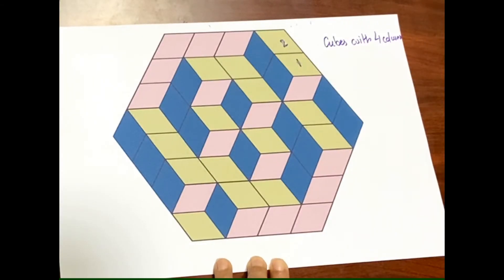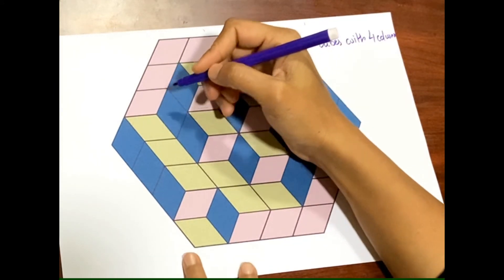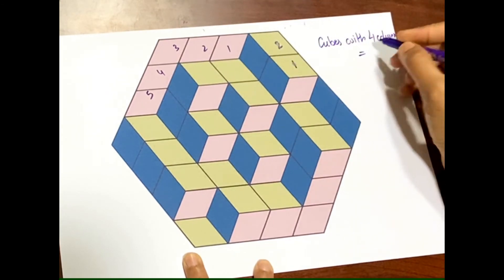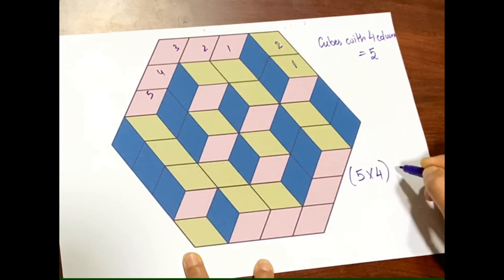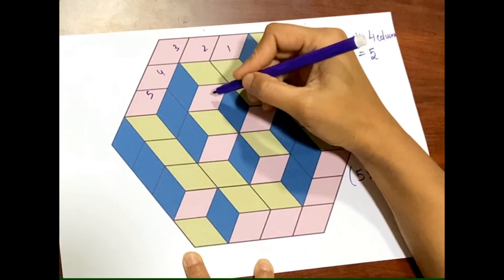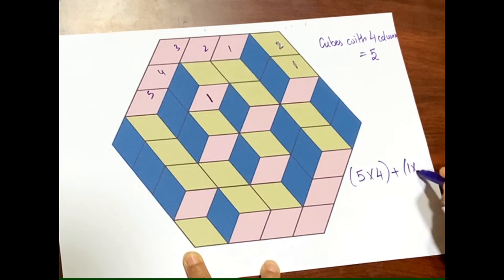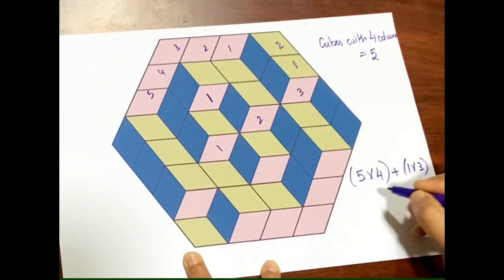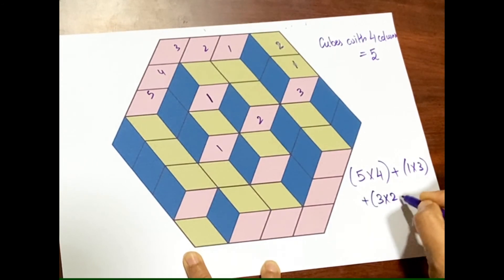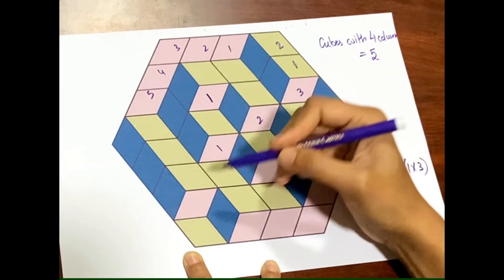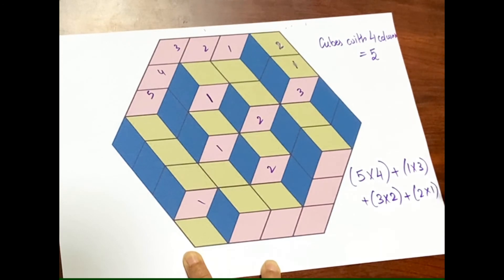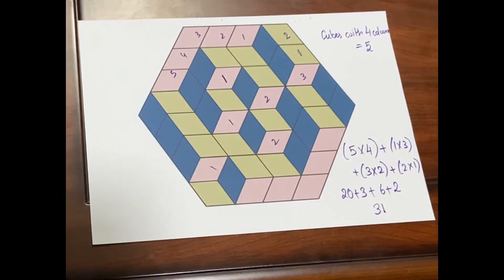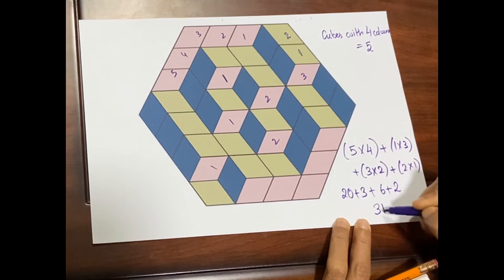Next, let's count the cubes with 4 columns first. These cubes here: 1, 2, 3, 4, 5 — these have 4 columns. So there are 5 cubes with 4 columns. Then let's count the cubes with 3 columns — it's only 1 cube with 3 columns. Then cubes with 2 columns: 1, 2, 3 — so 3 cubes with 2 columns. Then cubes with 1 column: 1, 2. So the summation is 20 plus 3 plus 6 plus 2, which is 31 cubes in this solid.